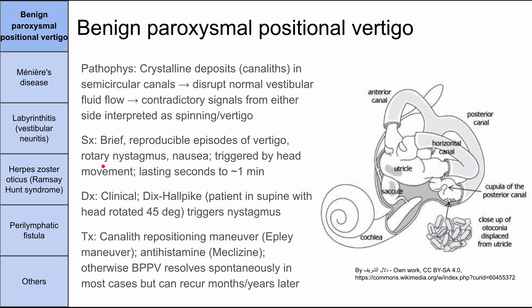The first cause is BPPV — benign paroxysmal positional vertigo. The pathophysiology involves crystalline deposits or canaloliths, also called otoconia, in the semicircular canals. They're displaced in the canals and disrupt normal vestibular fluid flow. When that happens, one side gives contradictory signals from the other, interpreted in the brain as a spinning sensation. Symptoms include brief reproducible episodes of vertigo, rotary nystagmus, and nausea, all triggered by head movement.